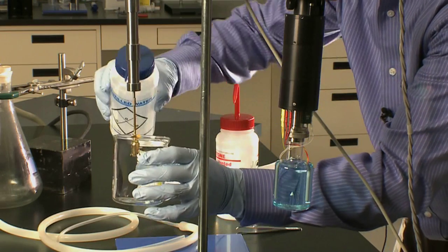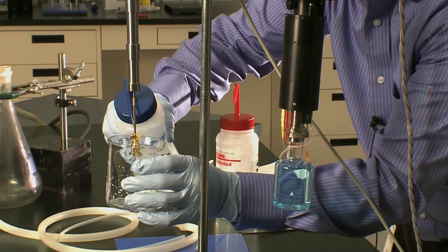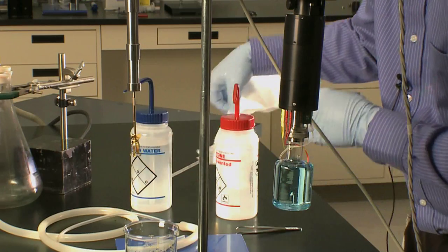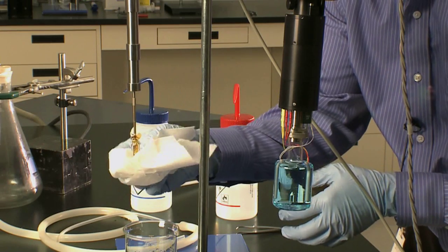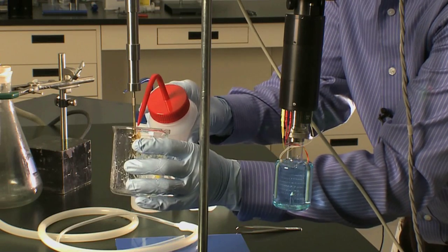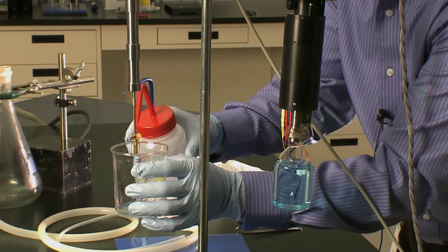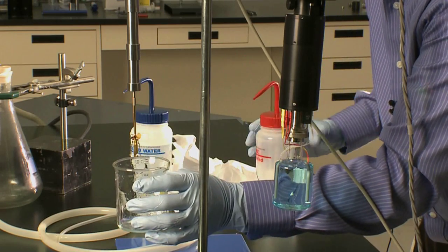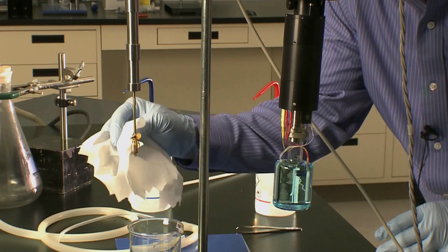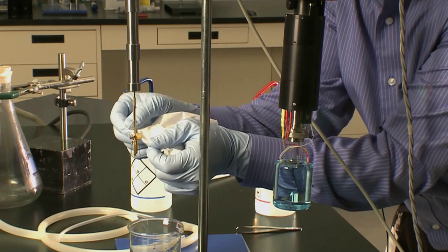Rinse off the stirrer with water, maybe followed by acetone. Dab it dry, then follow up with some acetone to fully dry the stirrer. Make sure that no glass fragments remain on the stirrer for your next experiment, and that the stirrer is completely dry before your next experiment.